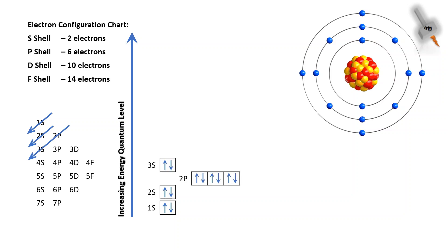Then 3S will hold 2 electrons. Now we are left with the last 2 electrons, so they will occupy the 3P subshell.